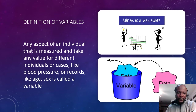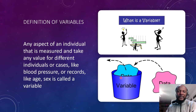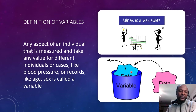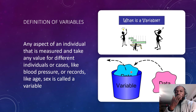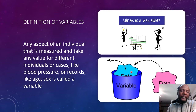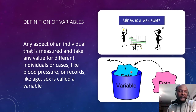You can see that you have a container — that's the variable — and within the container you put in data elements. Any aspect of an individual, an animal, or a thing that is measured and can take any value for different individuals or cases is called a variable. As the name implies, a variable is something that varies. Any aspect of an individual that changes from one individual to another can be called a variable.